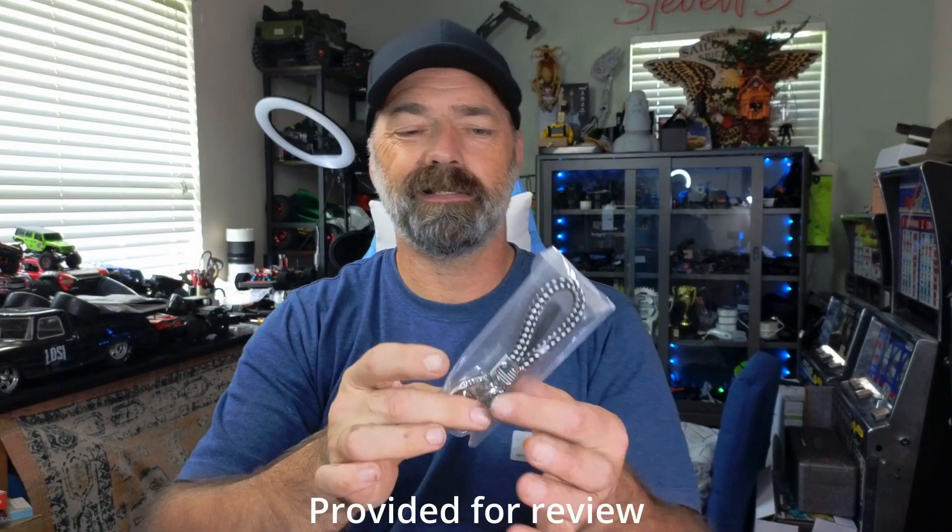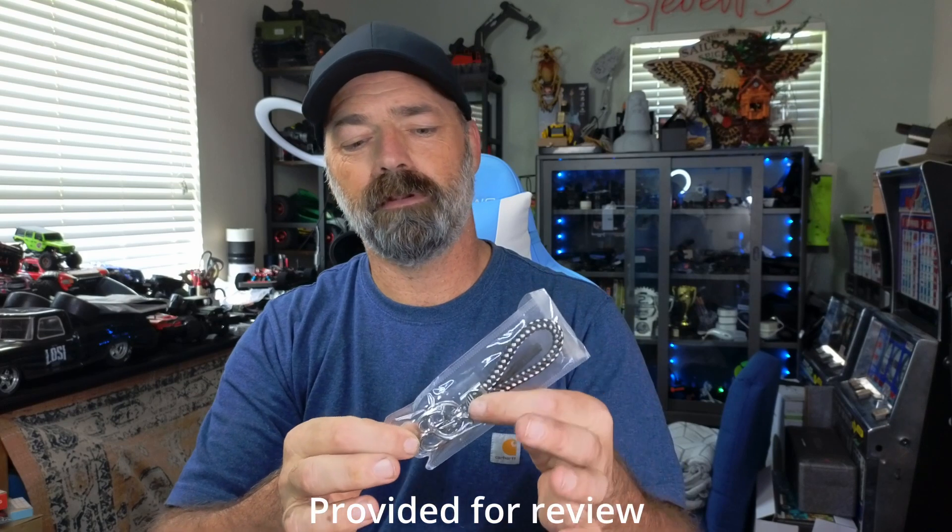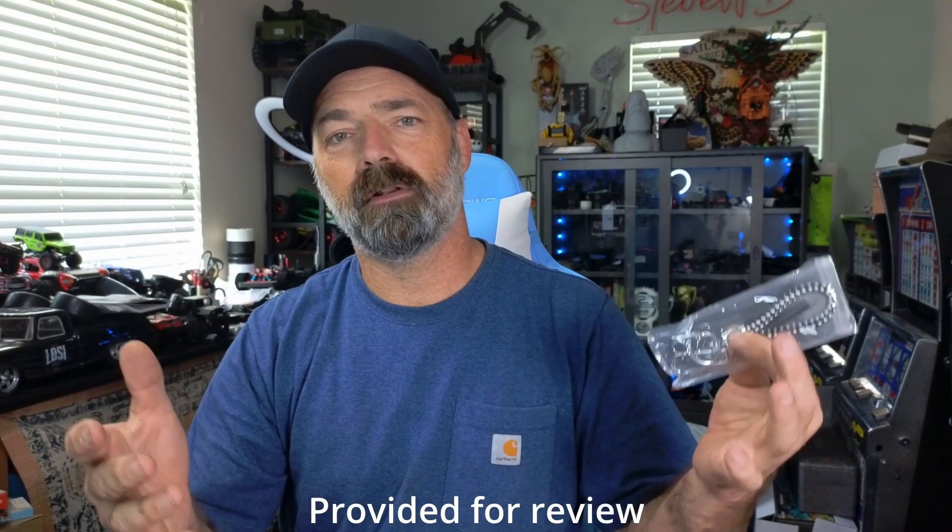Today we're going to be checking out this really cool keychain. It's all stainless steel and leather. It can hold your key fobs and your keys, and it comes with a little screwdriver so you can make adjustments and tighten things up. We're going to bring the camera down, open this up, take a closer look at it, and see how well this little keychain works.